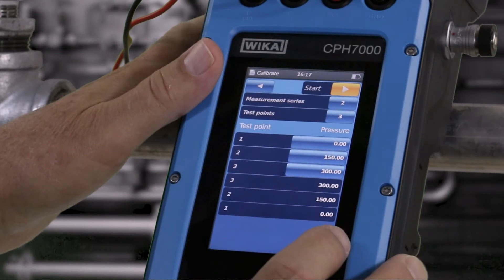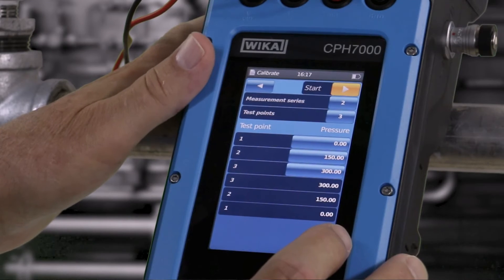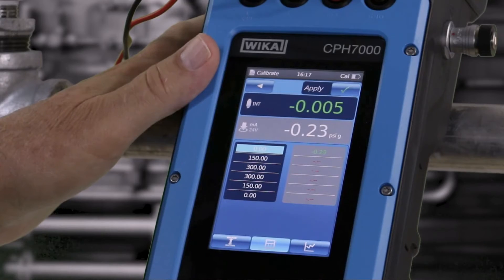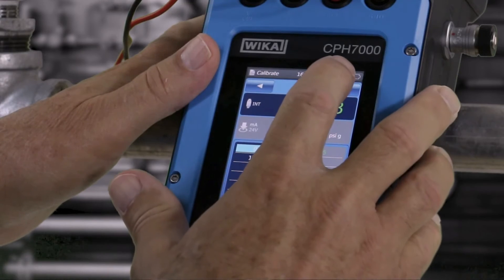Press start. If your calibration begins at zero gauge pressure, make sure the vent valve is open to atmosphere. When the zero point is stable, press the apply check mark. This records the reading.